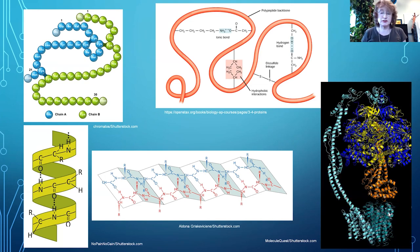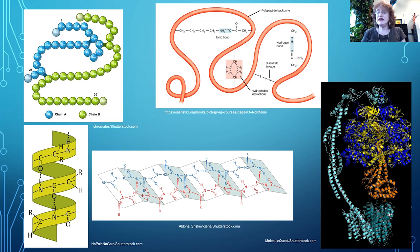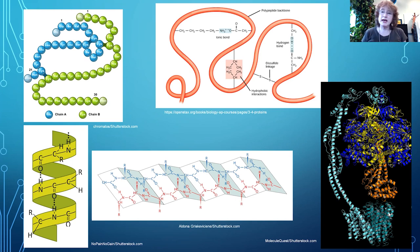The final structure, illustrated by ATP synthase shown here, is what's called the quaternary structure. For those of you not familiar with ribbon models, the alpha helices look like spirals, and the beta sheets are indicated by arrows. The quaternary structure is where different polypeptides come together to form a functional unit. ATP synthase is an excellent example of this.